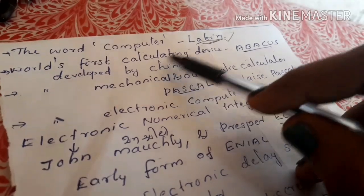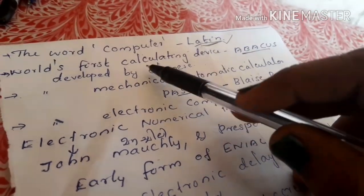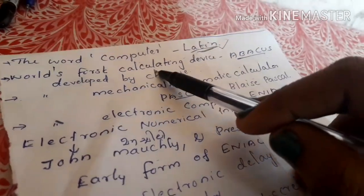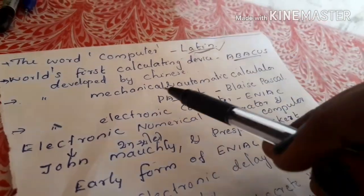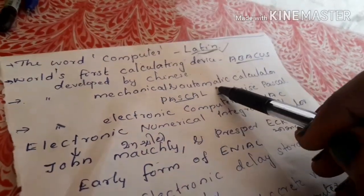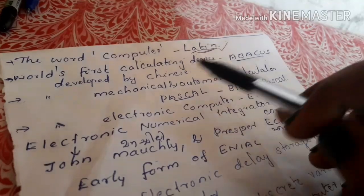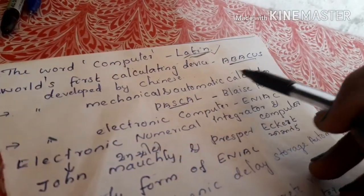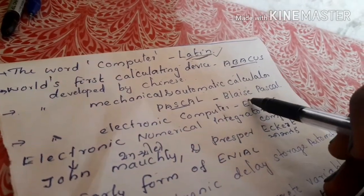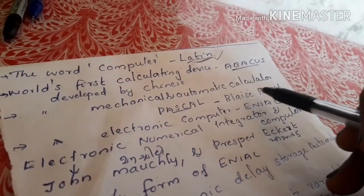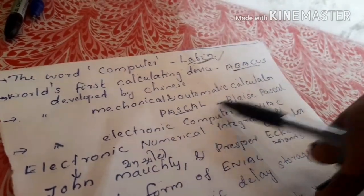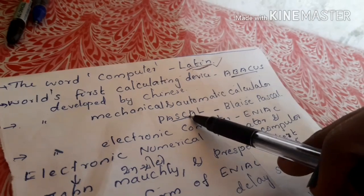Abacus is a calculating device. The mechanical and automatic calculator is Pascal, developed by Blaise Pascal. Blaise Pascal is a scientist. The calculator developed by Blaise Pascal.